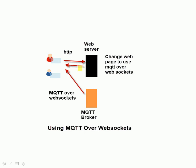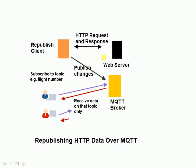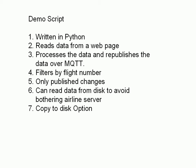In this video, we're going to look at the republish script and the data sent to the MQTT broker. The republish script is written in Python. It reads the data from the web page, processes it, and republishes it over MQTT. It filters the data by flight number, only publishes changes — so if the data hasn't changed it won't publish to the broker — and it can read the data from disk so you don't have to bother the airline server.